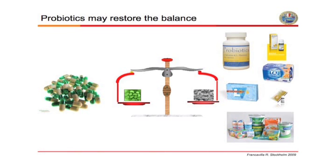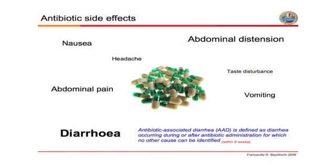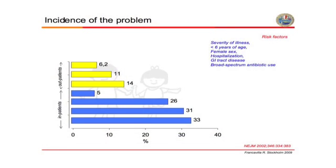Whenever we take an antibiotic, we may have symptoms. Those may be vague symptoms such as nausea, headache, taste disturbances, vomiting, but some are most common and more referred to the GI tract, such as abdominal distension, abdominal pain, and diarrhea. The incidence is not low — at least in children who are outpatients, 6 to 14% may have antibiotic-associated diarrhea. If the patient is inpatient, it may reach about one-third of patients experiencing diarrhea.